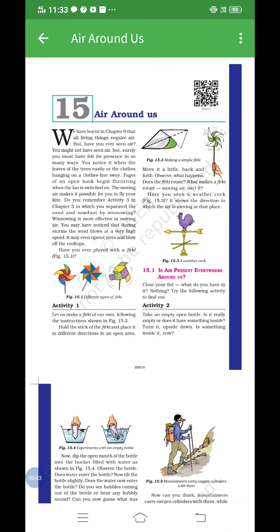Good morning students. Today we are going to learn a new lesson of science, lesson number 15, that is Air Around Us. Before this, you have learnt in chapter 9 how air is important and how air is required for all living things. But the question here is: have you ever seen air? You might not have seen air, but you surely must have felt its presence in various ways. Now we will see different examples of how you have noticed the presence of air.